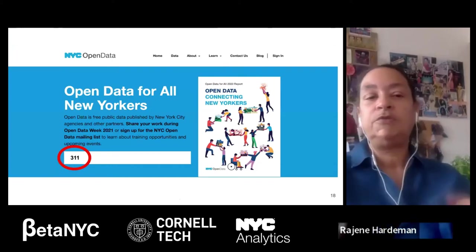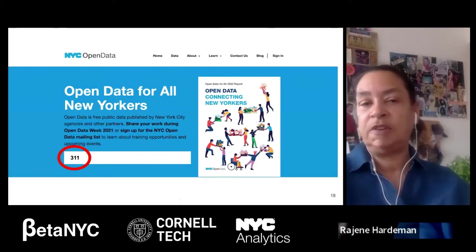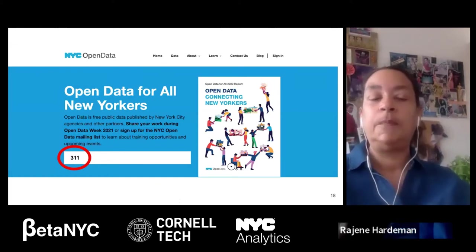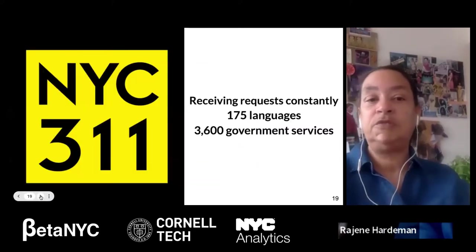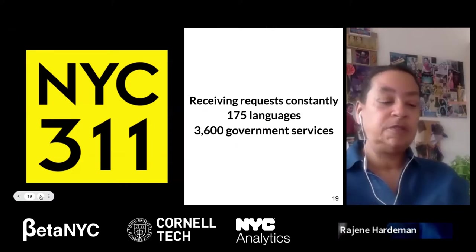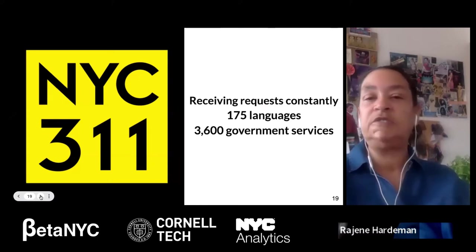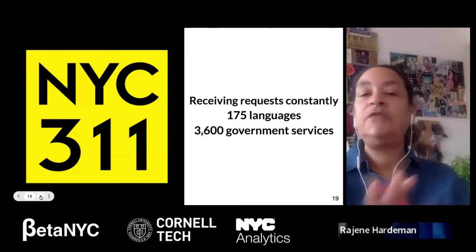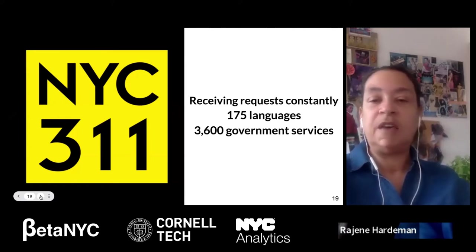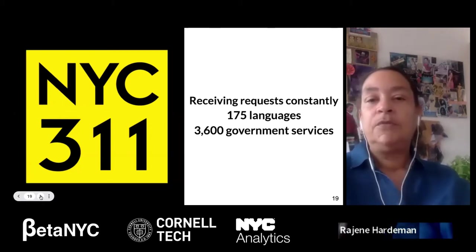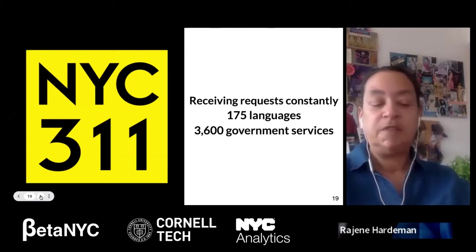We're going to use 311 as a search term. Just before we do that, let's take a quick look at what New York City 311 is. NYC 311 is our government resource for assistance and general information — not for emergencies. It's available 24 hours a day, 365 days a year, in 175 languages, covering over 3,600 government services, accessible via telephone, web, Skype, Twitter, Facebook, and mobile apps.